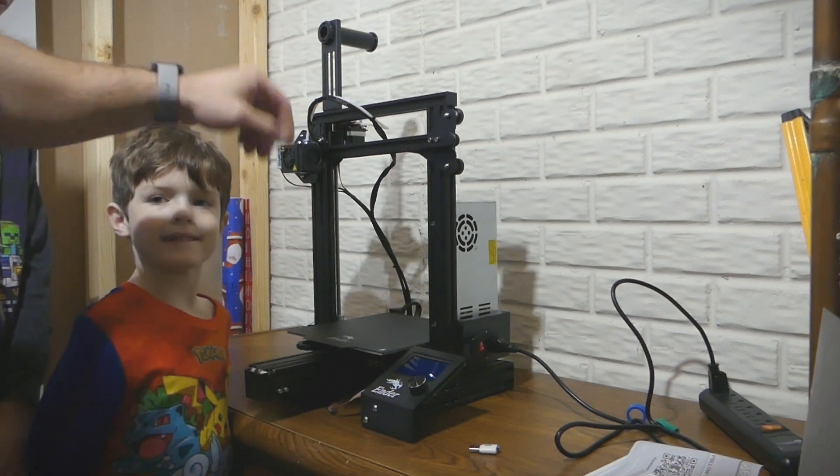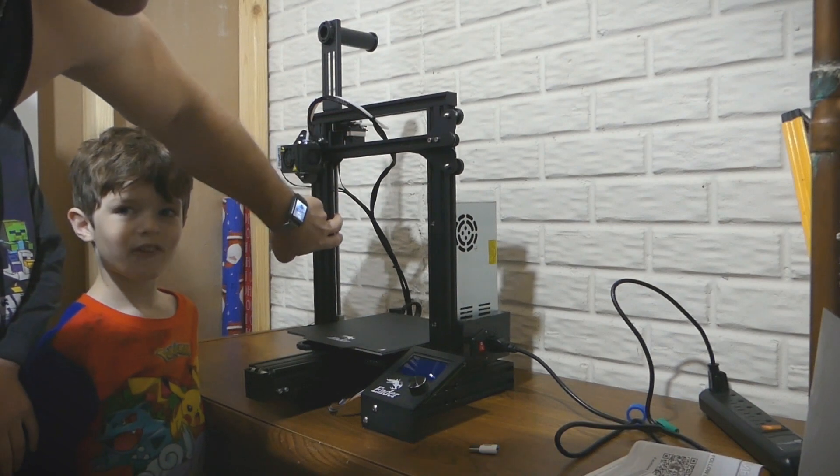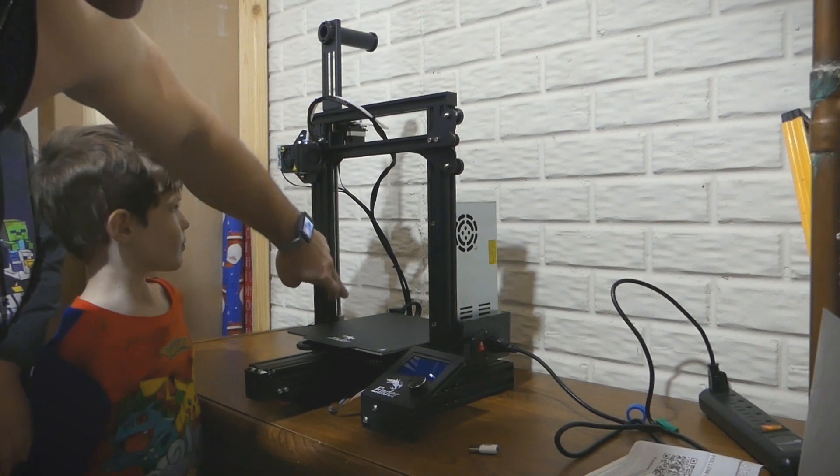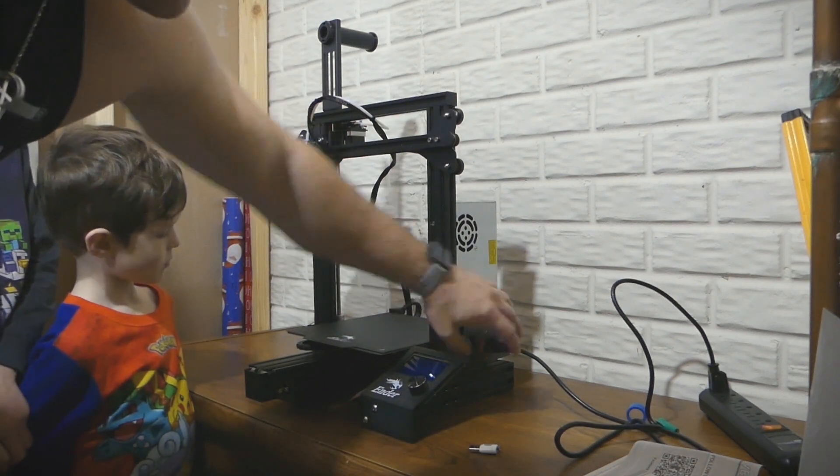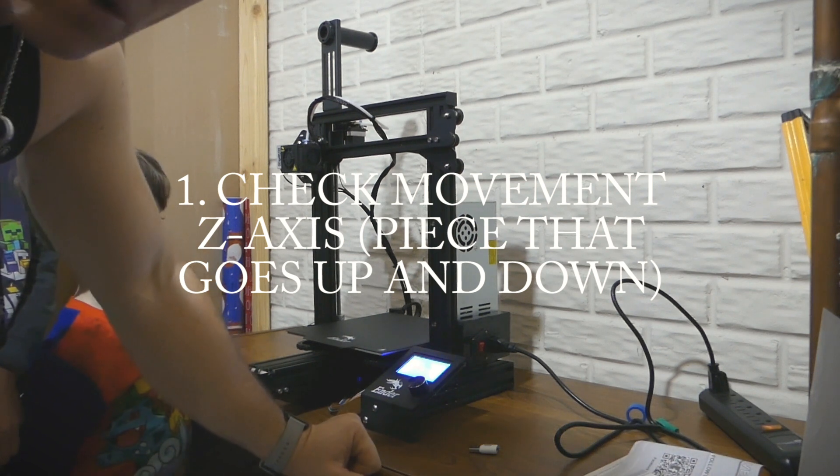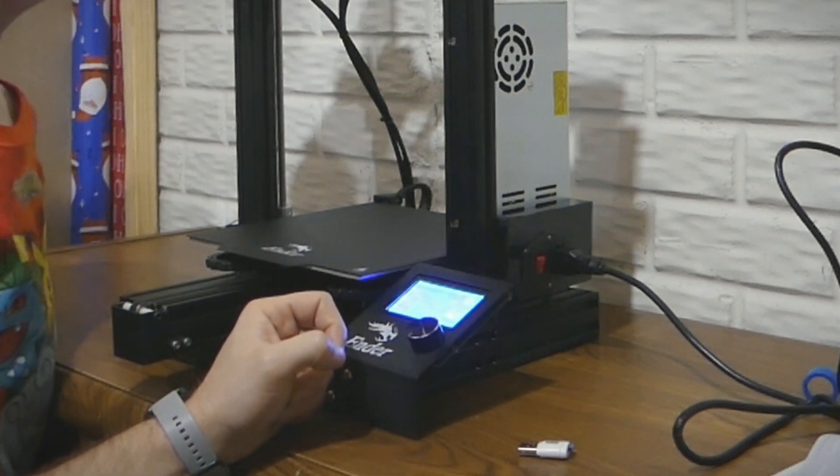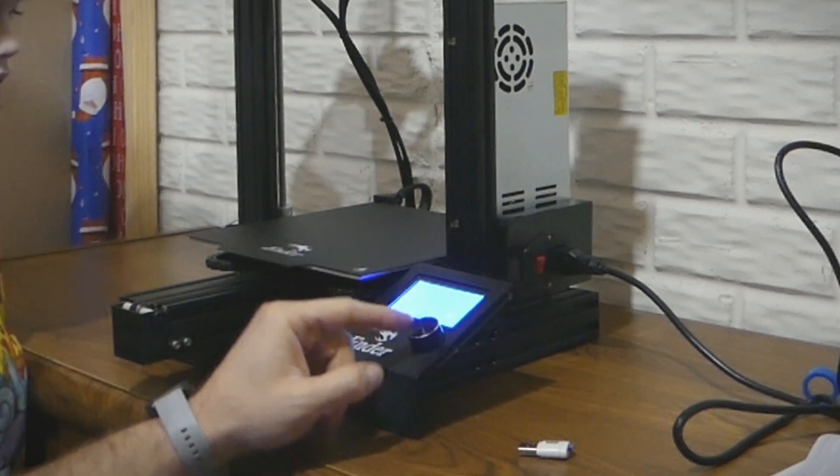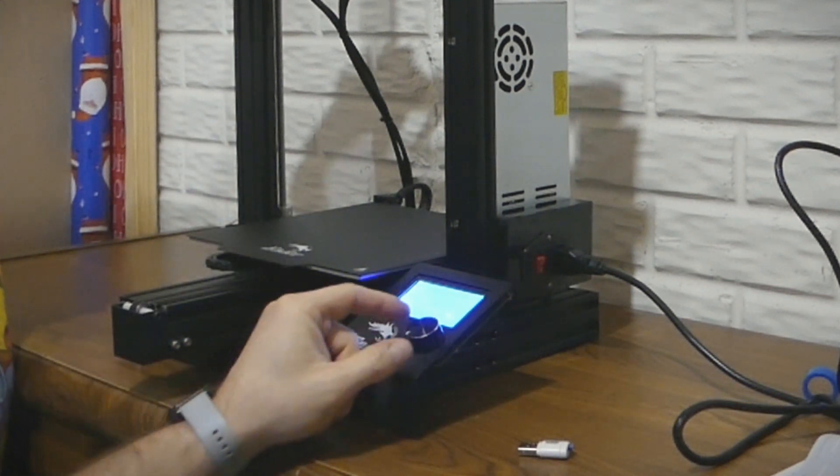On the backside, basically how this gets raised and lowered - this spindle - I actually had to loosen that up last night. Basically what I did was just turn the unit on and I did the home feature, the auto home feature. So going into the menu, pressing the button, going down to motion and just pushing down, and then going to auto home.